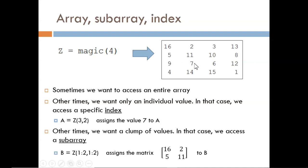Other times, we want a section of values from that original matrix. This is called a subarray. In this example, we are pulling out the top left quadrant of matrix Z because I requested only the first two rows and two columns. More details coming soon on how to read this notation.